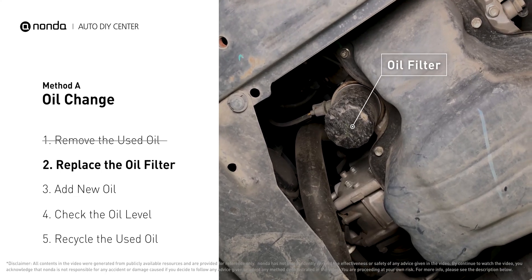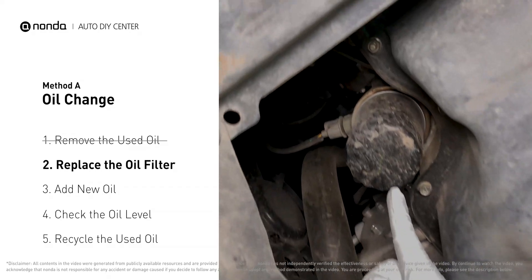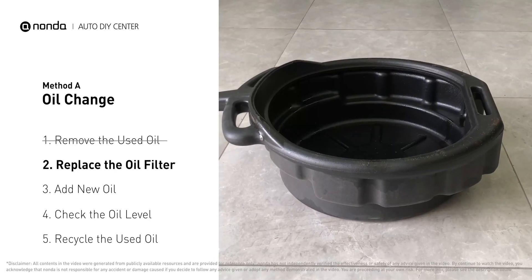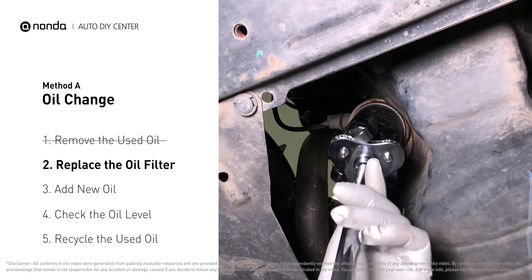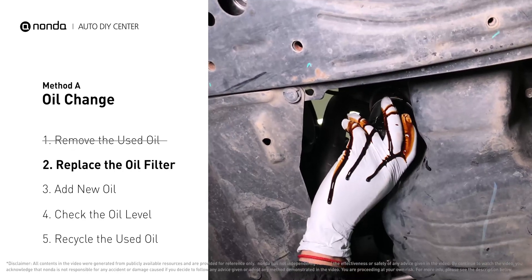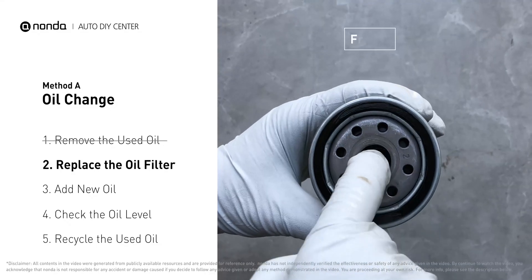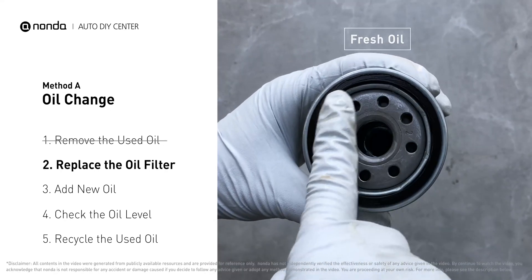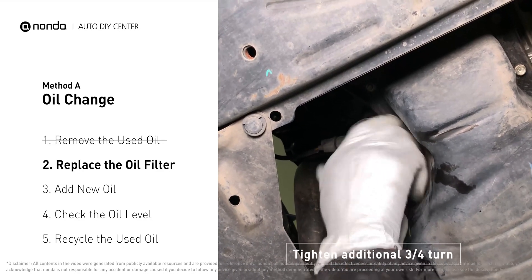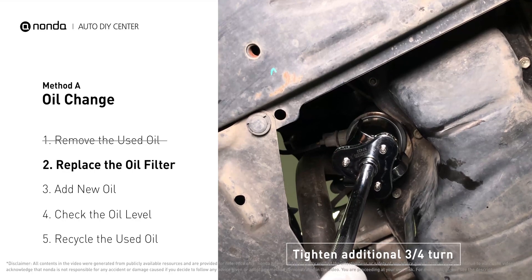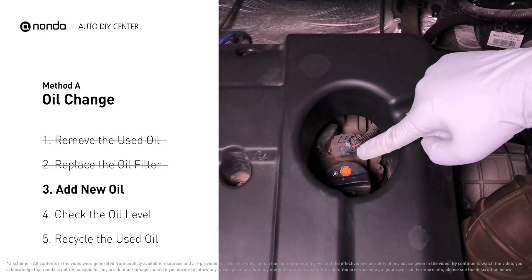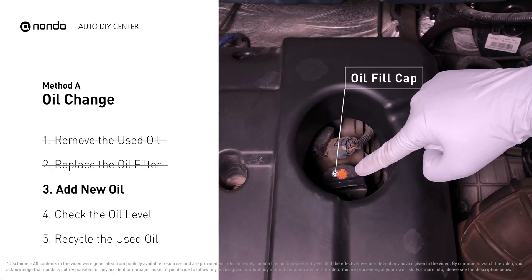The oil filter is usually located beside the oil pan or under the hood of your vehicle near the engine. Place the collection pan under the filter — there will be oil in the filter itself that could be hot, so it is important that the oil goes into the collection pan. Spread a bit of fresh oil evenly on the new filter's gasket, then install the new oil filter. Tighten the filter an additional three-quarters of a turn, being sure not to over-tighten. To fill the vehicle with fresh oil, first locate your oil fill cap at the top of the engine.